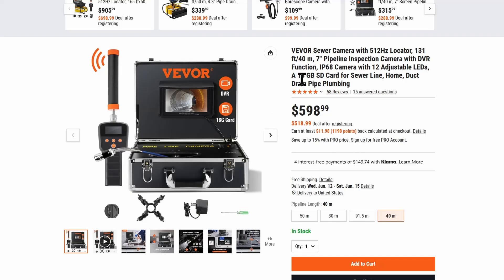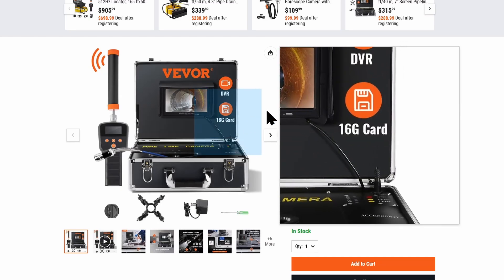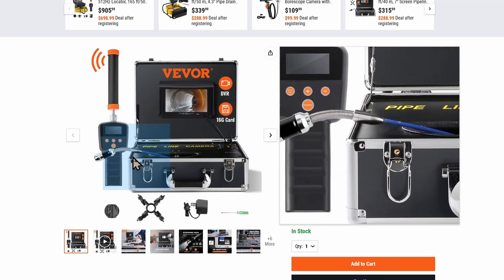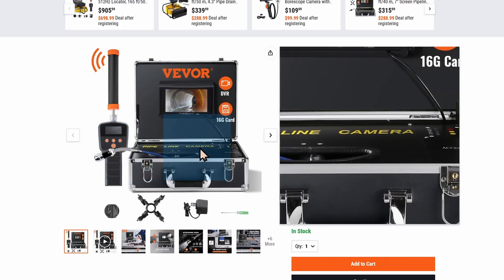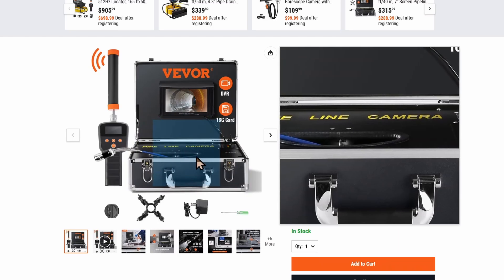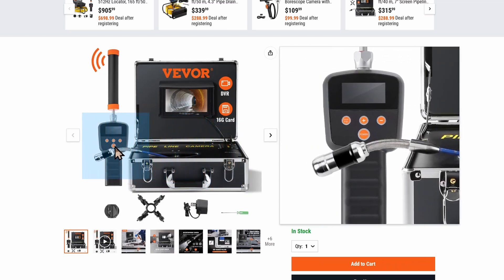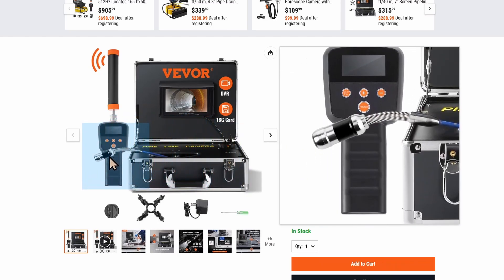However, this does let you locate something that you normally would not be able to see. This is actually part of a Vibor branded pipeline camera kit. As we can see, it says right here, Vibor sewer camera with 512 Hertz locator.